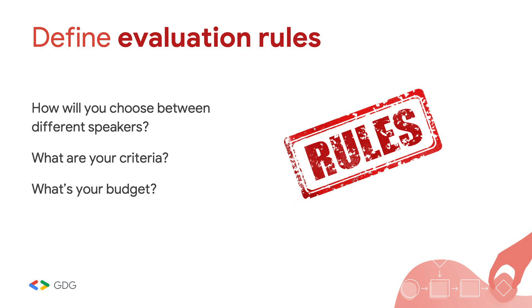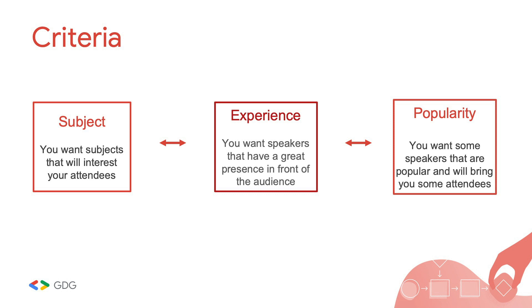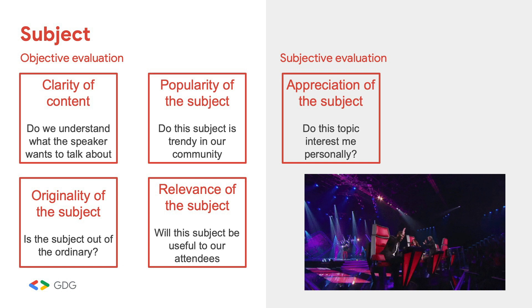How to evaluate speakers? It's a little bit more complex. You need to define your rules at the beginning, otherwise it will be very hard when you have a big list. My criteria are divided into three subjects: the content subject itself, the experience of the speaker, and the popularity of the speaker. For the subject, I subdivide it into whether it's clear, whether it's original, whether it's trending, and whether it's relevant to your community.